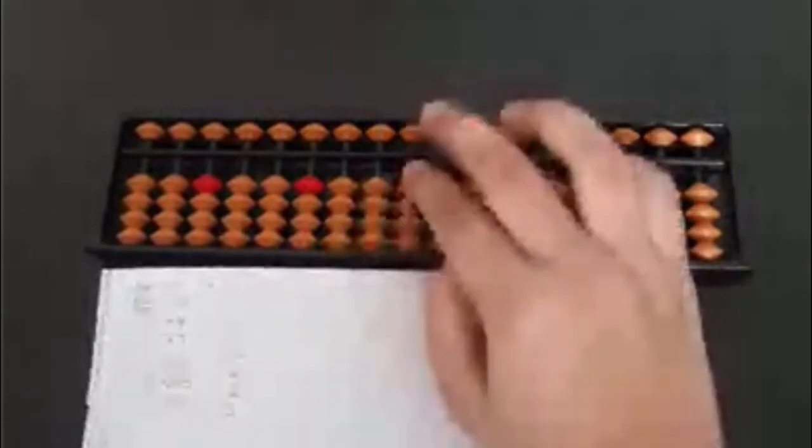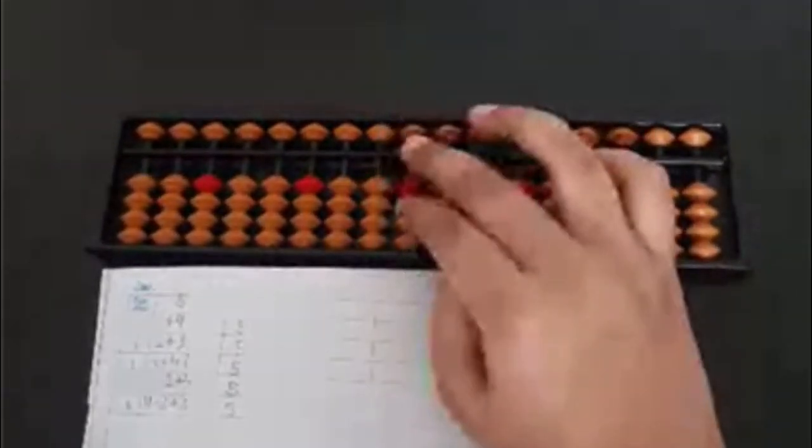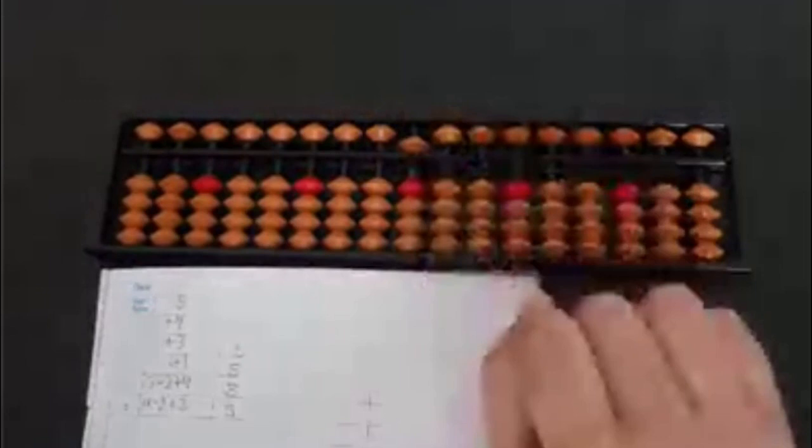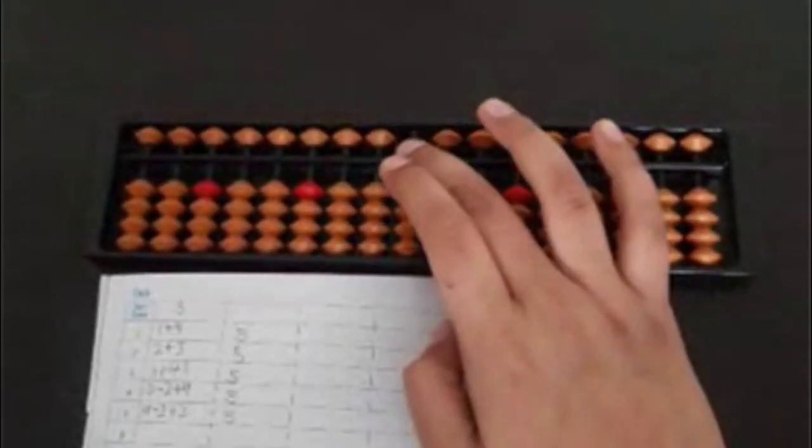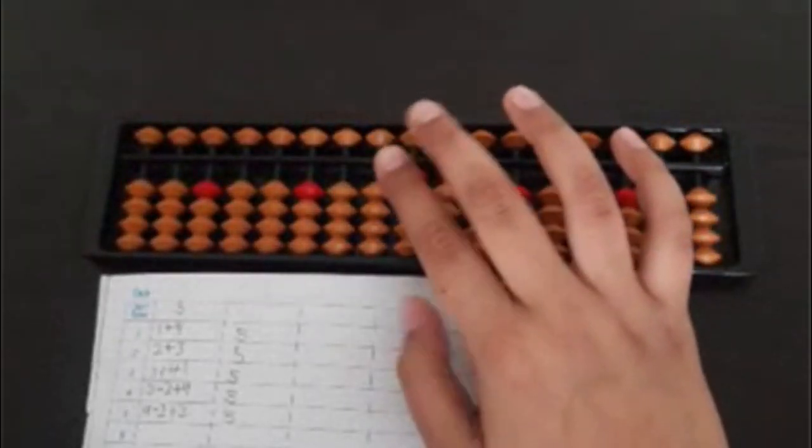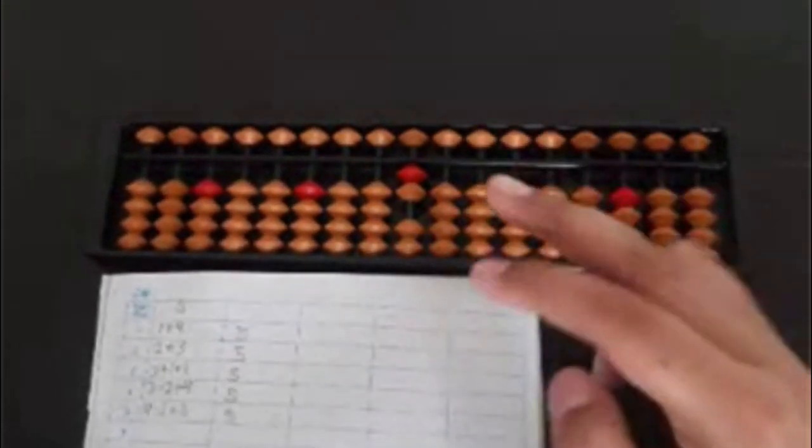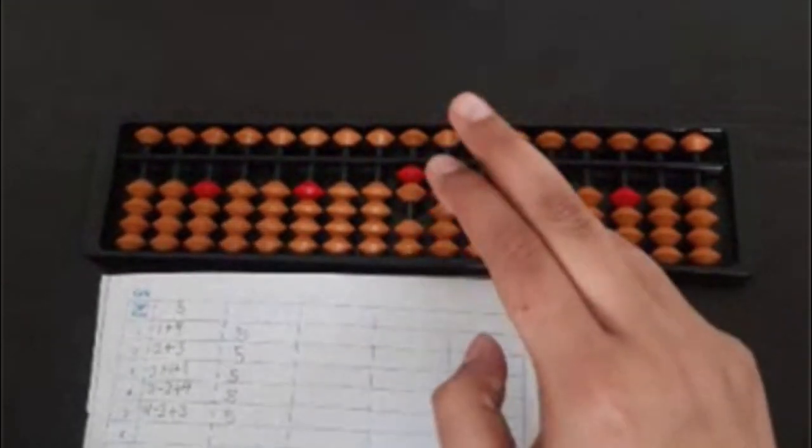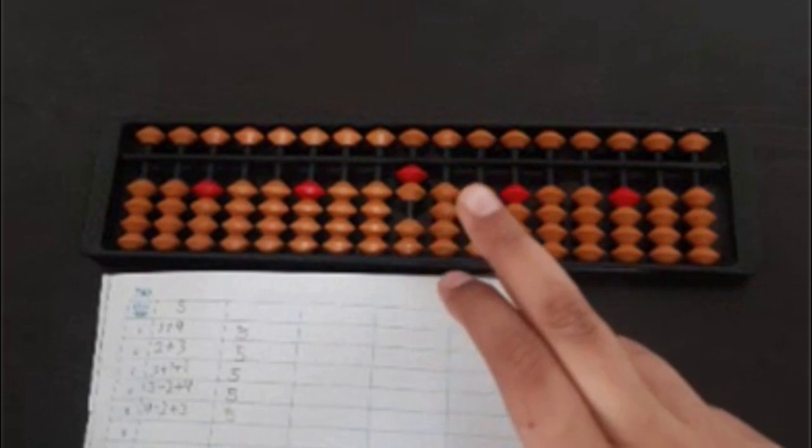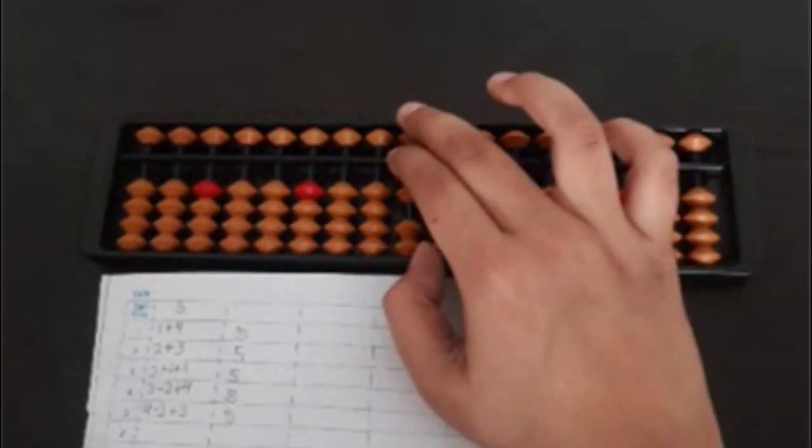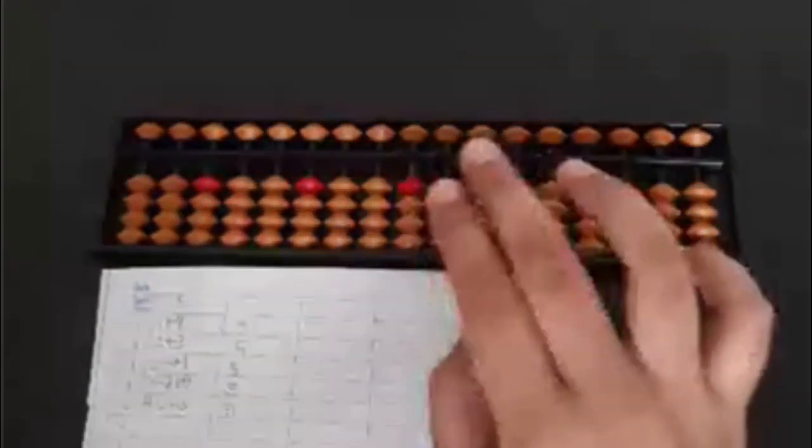So 1 plus 4 as I told you and 2 plus 3. Whenever we have to clear the ones bead and add 5 ones, we will be putting our fingers like this and clearing it like this. Moving our fingers downwards like this.